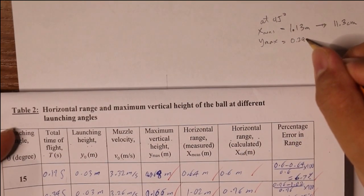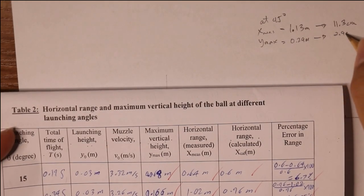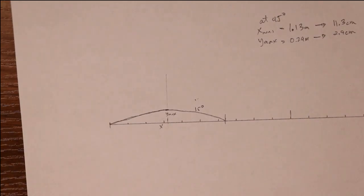Y maximum is equal to 0.29 meters. This will scale to 2.9 centimeters. This is at 45 degrees. Let's graph it on top of our 15 degrees.